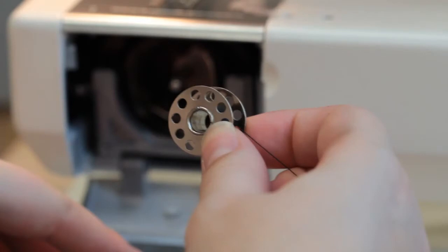First, open the front loading panel of the machine. Remove the bobbin case by lifting the arm on the case.